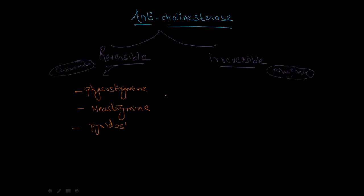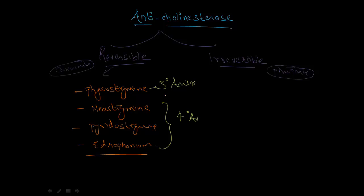The reversible anticholinesterases include physostigmine, neostigmine, pyridostigmine, and edrophonium. One key difference is that physostigmine is a tertiary amine while all other drugs are quaternary amines. Since physostigmine is a tertiary amine it is lipid soluble, so it can cross the blood-brain barrier and have CNS effects. Quaternary amines are lipid insoluble, so they cannot cross the blood-brain barrier and will not have CNS effects.